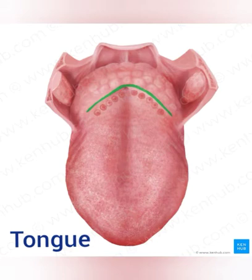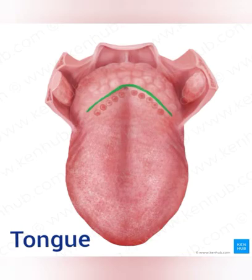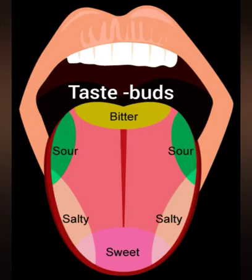Tongue also helps us to talk or communicate with people. There is a diagram of the tongue. Tongue is divided into different sections for detecting different tastes.